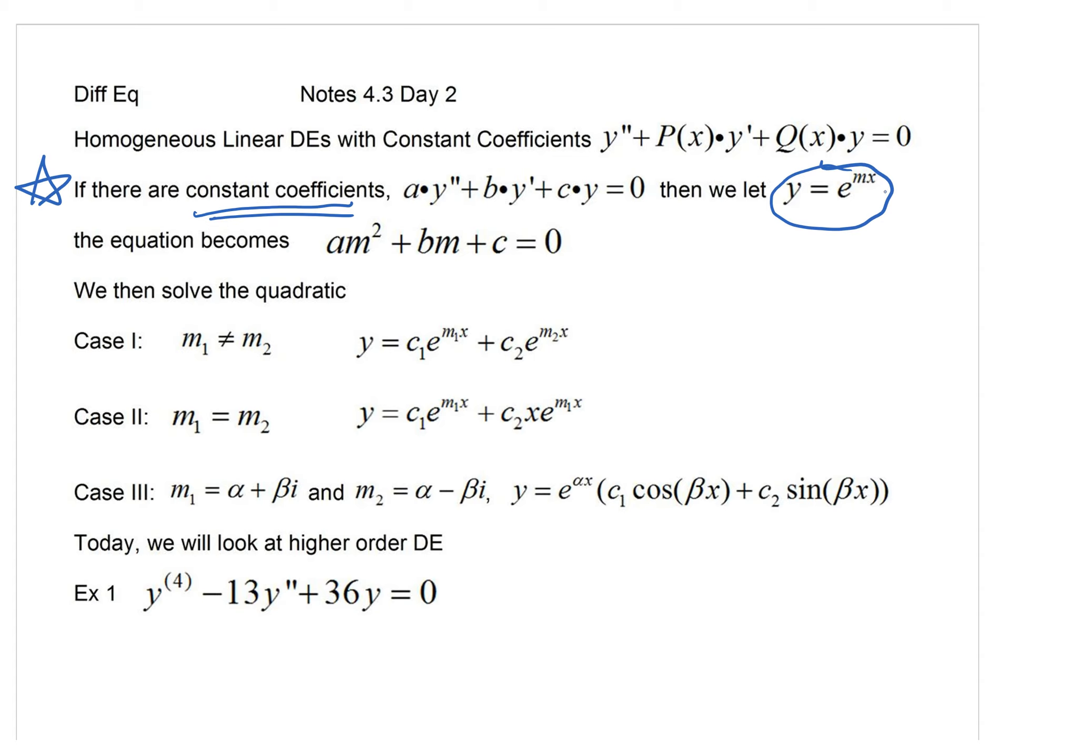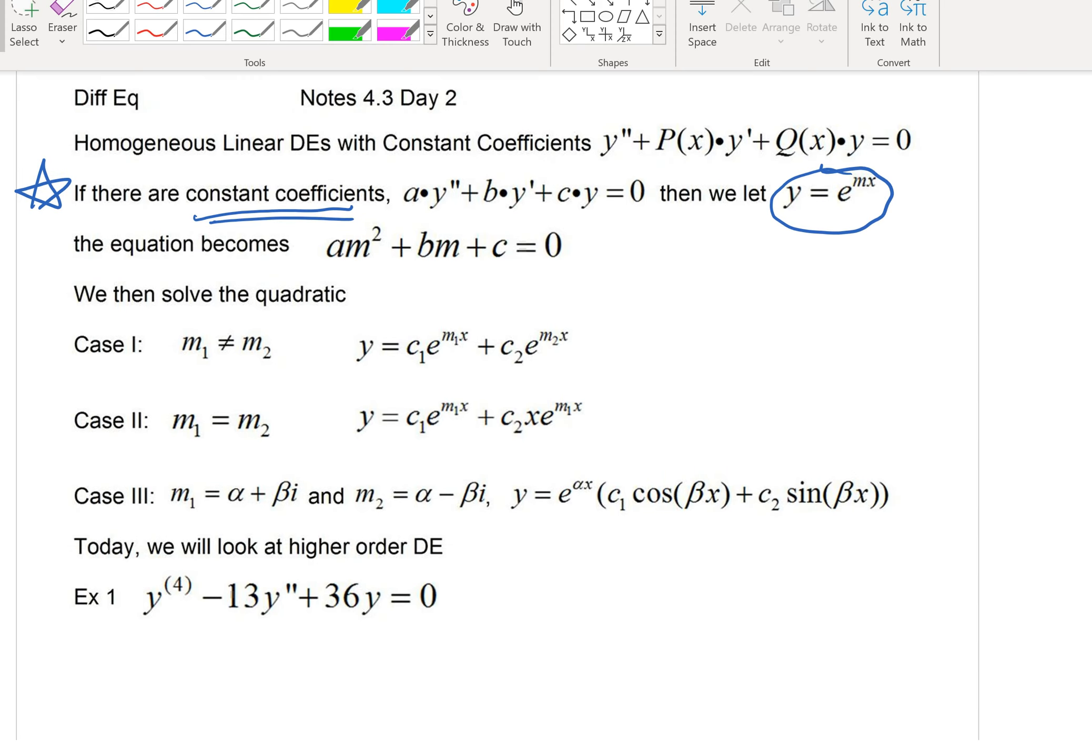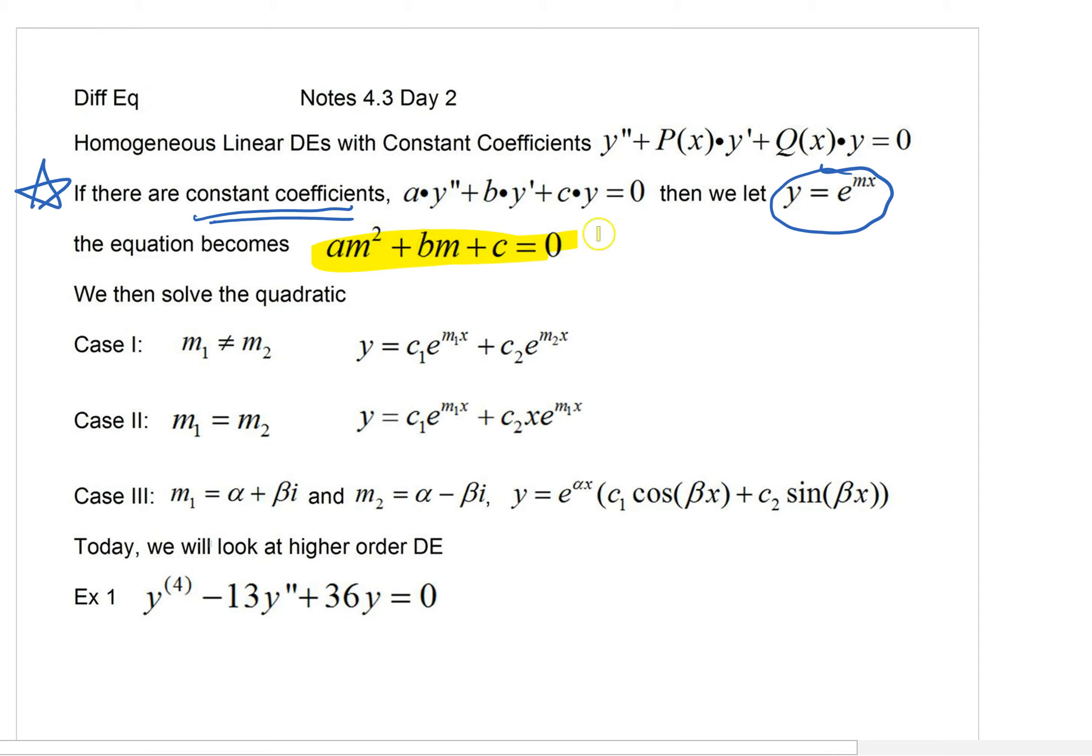We know that when we take the second derivative, we'd have to use a chain rule twice, two m's would come out. So we'd have m squared times e to the mx. For the first derivative, just one m would come out from one chain rule. And if we divided e to the mx on the left side and on the right side, you would get this quadratic. This is such a great section right here. Take a look at the original differential equation. As long as we've got constant coefficients, we're going to be able to get some quadratics.